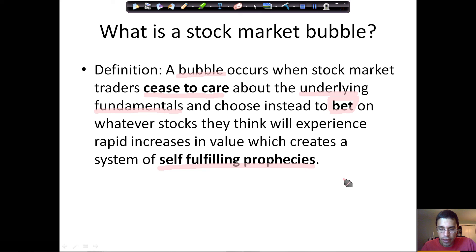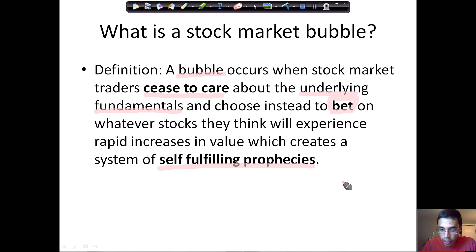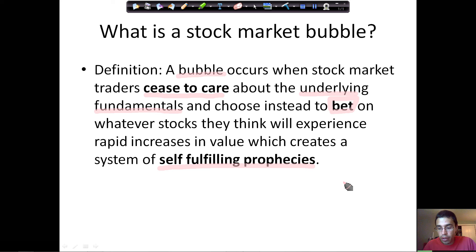Under normal circumstances, ideally stock traders care about profits — they buy stocks thinking a company is going to do well and make profits. However, when you have a bubble, you get something very different: traders don't care about long-term profitability. Instead, they're chasing short-term capital gains, meaning they don't care about making dividends over the long run. They care about: is the value of this stock going to double next week? And if it is, I'm going to buy it.